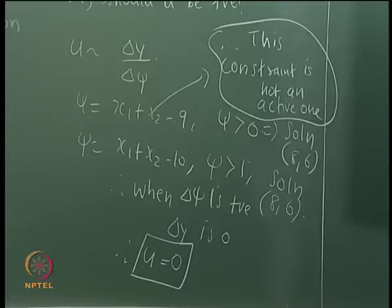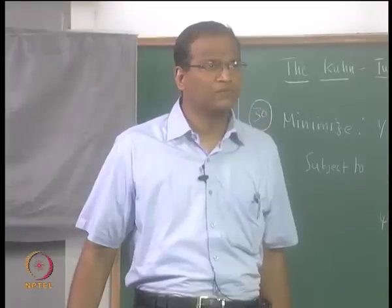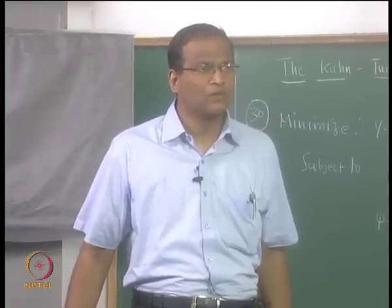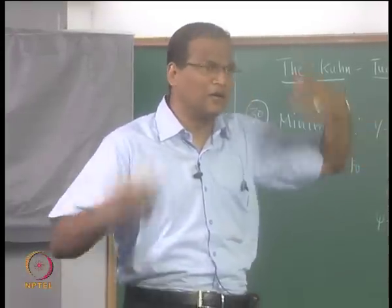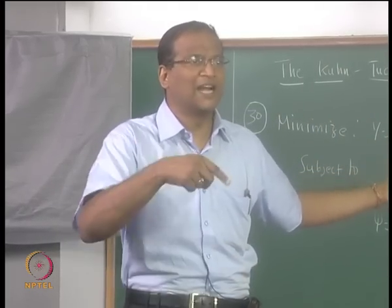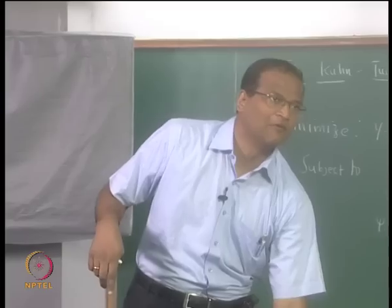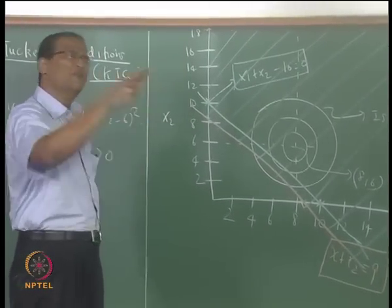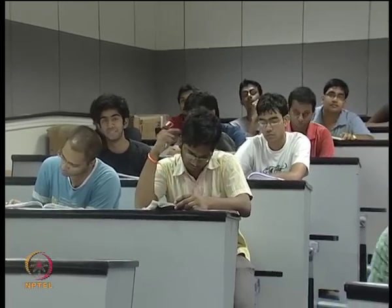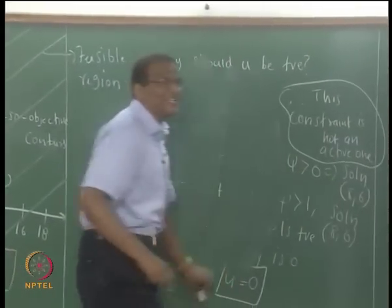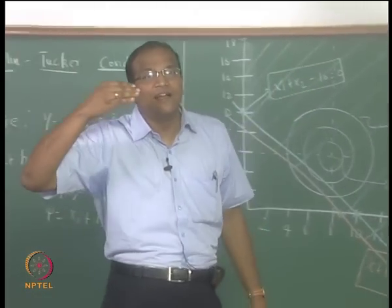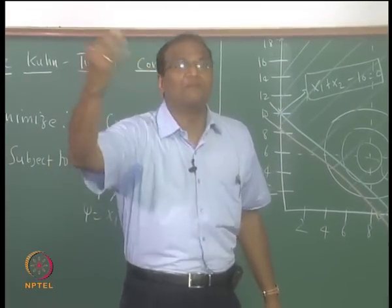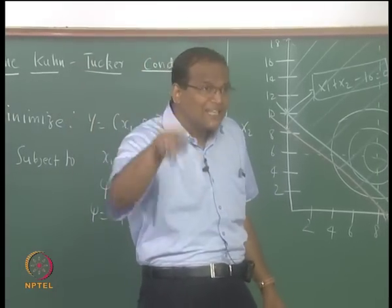When the feasible region is reduced, the new optimum can at best be equal to the old optimum, but cannot be less than that for a minimization problem. Compared to ψ > 0, when we impose ψ > 1, we lose a certain portion of the feasible region. Therefore any solution satisfying ψ > 0 will anyway satisfy ψ > 1, so we cannot hope to find a new optimum with a lower y value.